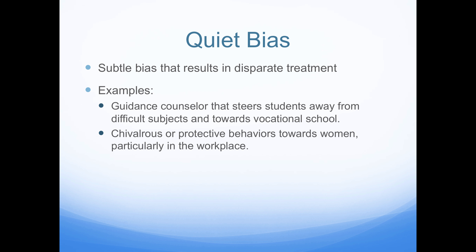A great example of that was my son, who wasn't the hardest working high school student, and I wasn't the most active parent with the schools, so we were a kind of low-profile family. His guidance counselor told him that he wasn't Purdue material, which almost caused him not to apply. Thankfully he did and graduated with straight A's except for one B. But that's the kind of insidious message that's the result of quiet bias.